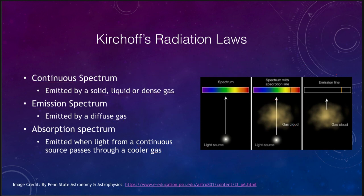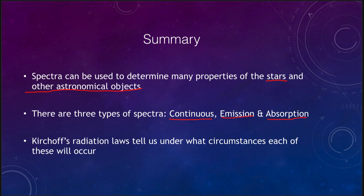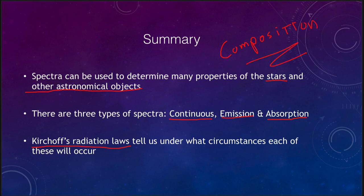So to summarize what we've covered: spectra can be used to determine many properties of stars, galaxies, and nebulae — including what they are composed of and how they're moving. We talked about three different types of spectra — continuous, emission, and absorption — and the various conditions needed to form each of them, summarized as Kirchhoff's radiation laws. The key takeaway is that learning composition is very important, and since we have no other way to get a sample of a star, we must use the light that comes from it.